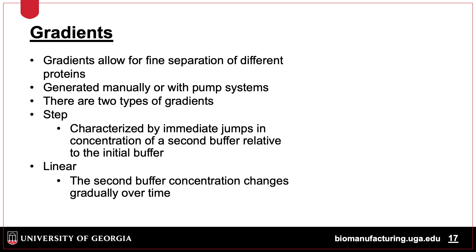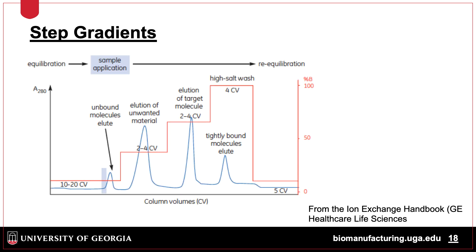The buffer is applied to the column in what is called a gradient. There are two types of gradients. A step gradient is where the concentration of the elution buffer is changed instantaneously relative to the initial buffer. A linear gradient is where the elution buffer is changed more gradually over time. For each step, a certain number of column volumes are run. A column volume is the total volume inside the column that houses the resin — so if 10 column volumes of a 5 mL column are run, that means 50 mL of elution buffer (buffer B) is run over the column. Each step can result in different populations eluting, with a final wash to remove anything still bound, then a drop back to the starting buffer concentration to re-equilibrate.